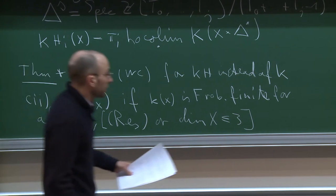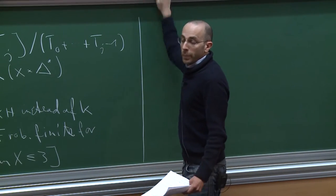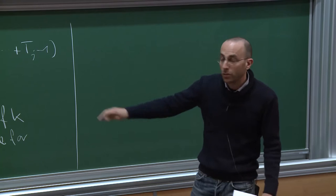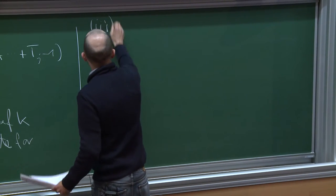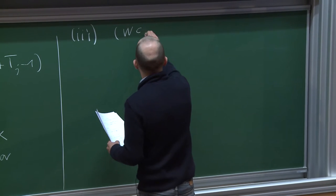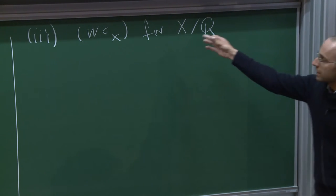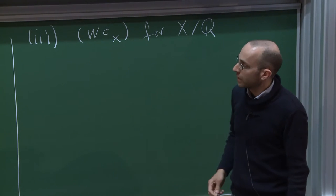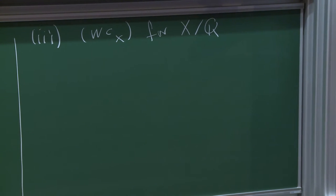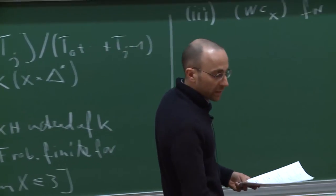Moreover, the third statement is that the Weibel conjecture holds for all schemes of characteristic zero — that is, for any scheme containing Q. In particular, this is mostly due to Matthew Morrow with some contribution from myself. Now, as Gabber already mentioned, you have to reduce the Weibel conjecture to statements for better schemes like quasi-excellent schemes. Let me now explain these reductions. Although these reductions are really elementary, I couldn't find them anywhere in the literature.